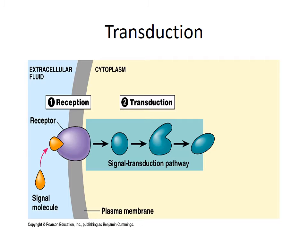When that molecule binds to the receptor protein, something called transduction occurs. That's when the signal is relayed through the cell membrane to the other side. Basically, it's a shape change — what we call a conformational shape change. And remember: shape determines function. So when that shape change occurs, it's going to cause a reaction on the inside of the cell.